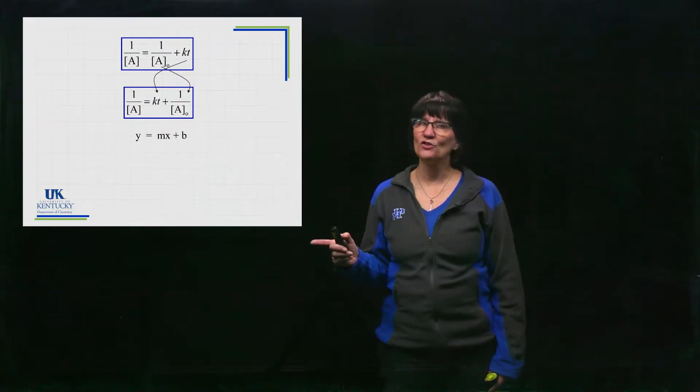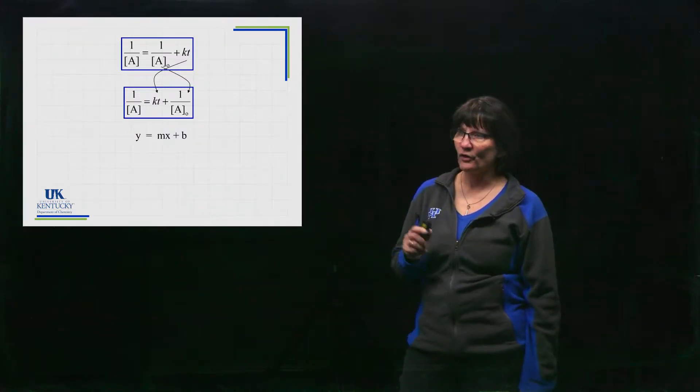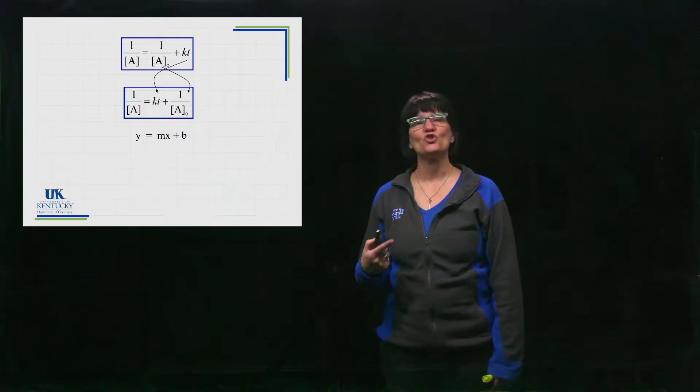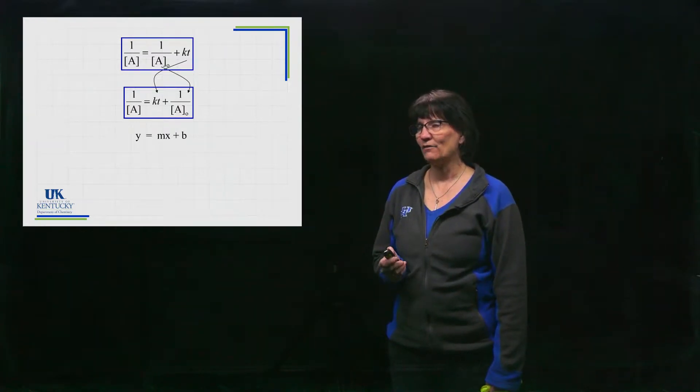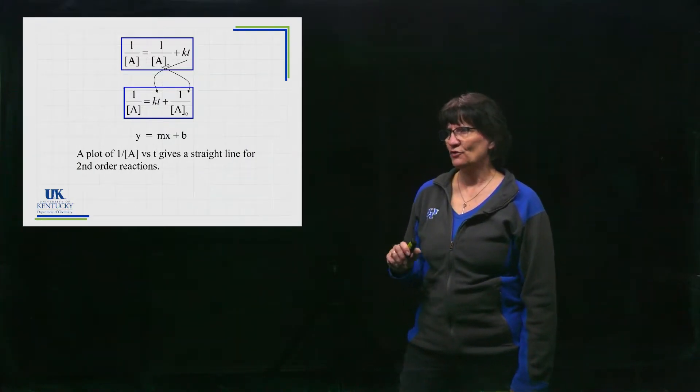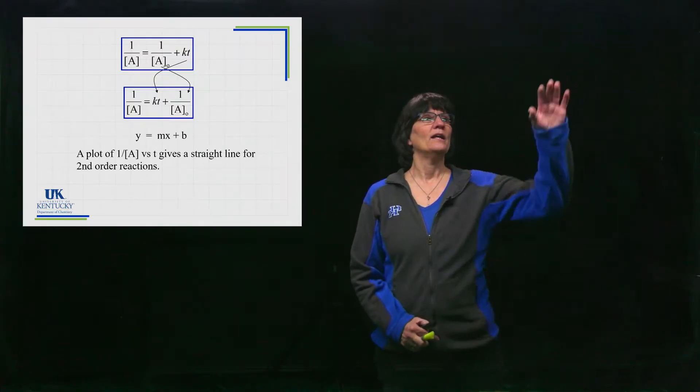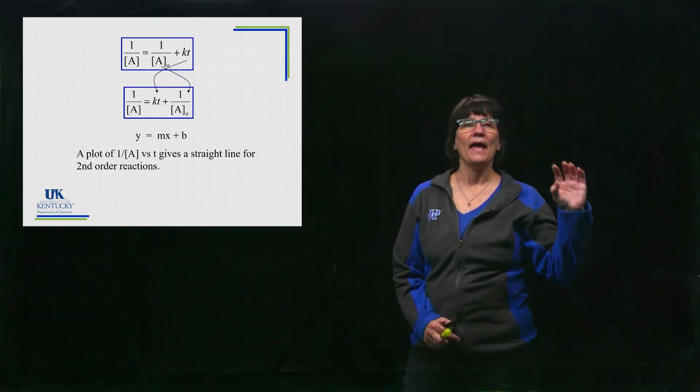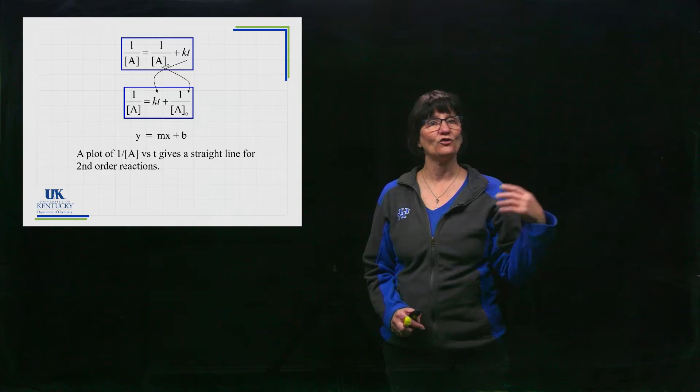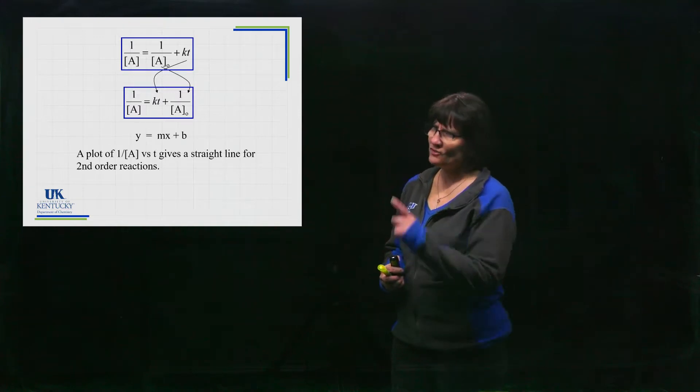It's in the slope-intercept form of a line, so this tells me that if I plot along the y-axis one over concentration [A], and I plot along the x-axis the time, which we always do, then I have a straight line and I could get the slope out of this equation. So a plot of this versus time gives you a straight line if it's second order. That's one way we can determine the order. We can plot natural log versus concentration—if that's a straight line, it's first order. If it's not a straight line, we can try one over concentration versus time. If that's a straight line, then it's second order. If that's not a straight line, then it's not second order.